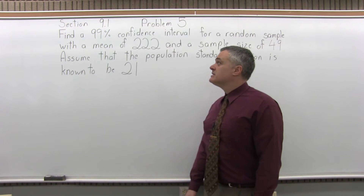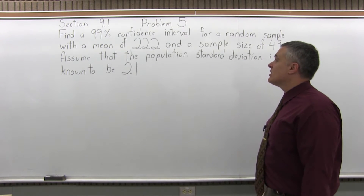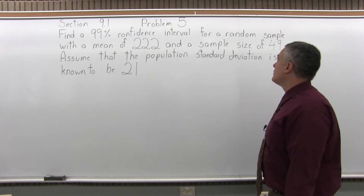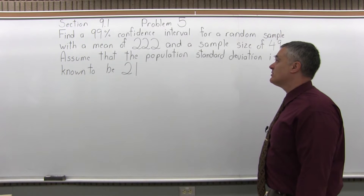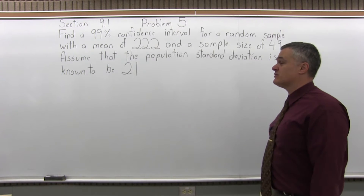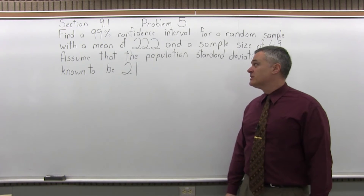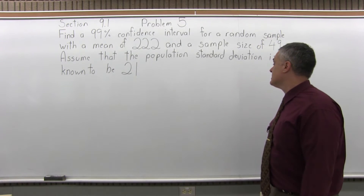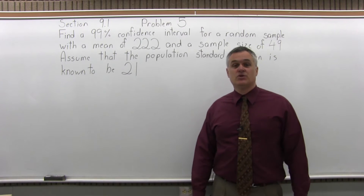Find a 99% confidence interval for a random sample with a mean of 222 and a sample size of 49. Assume that the population standard deviation is known to be 21.